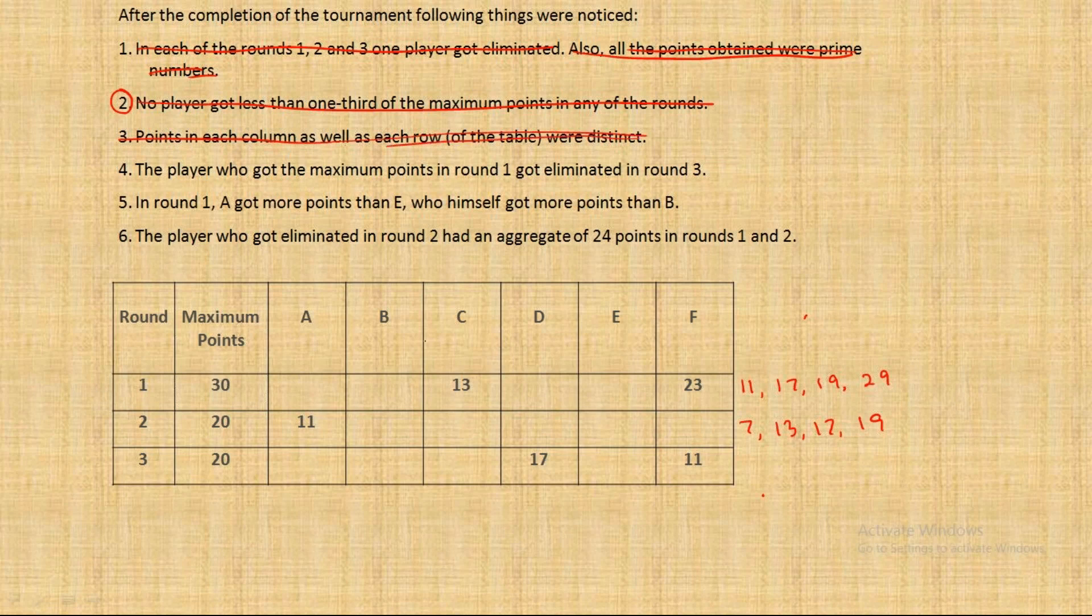Now let us think about who got the minimum in round one. The person who gets 11 points will be eliminated in round one. Clearly it cannot be A because A gets 11 points in round two. Clearly it cannot be D because D reaches round three. How can he be eliminated after round two? So it could be B or E.